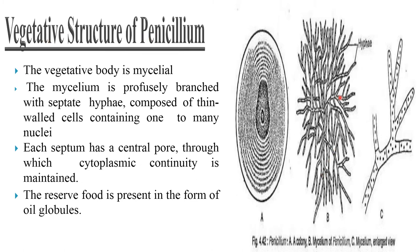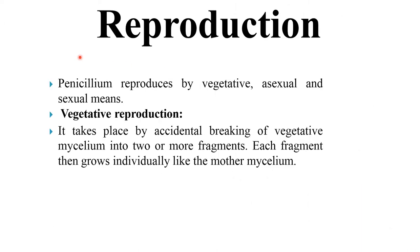The vegetative structure of Penicillium: the vegetative body is mycelium. The mycelium is profusely branched with septate hyphae composed of thin-walled cells containing one to many nuclei. Each septum has a central pore through which cytoplasmic continuity is maintained. The reserve food material is present in the form of oil globules.